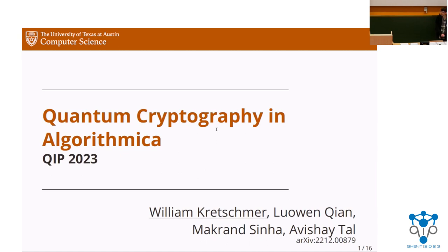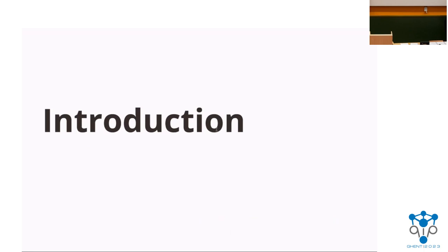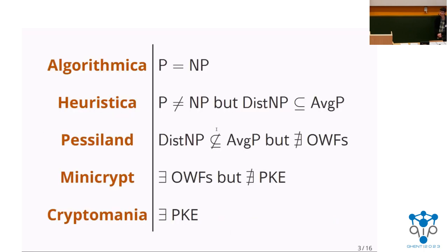It was very convenient having Tomoyuki's talk right before mine because this talk very well complements it, and he's already given a lot of the background. I will repeat it again in some capacity. To start things off, I want to explain what this title is about. This title comes from a well-known survey paper by Russell Impagliazzo from the 1990s about average case complexity surrounding the P versus NP problem.